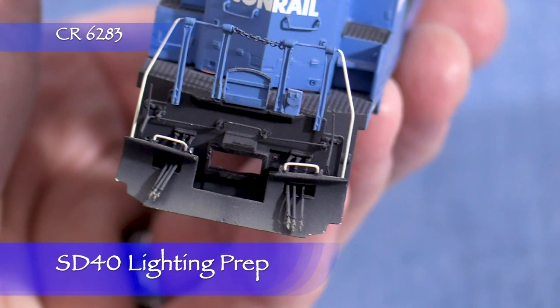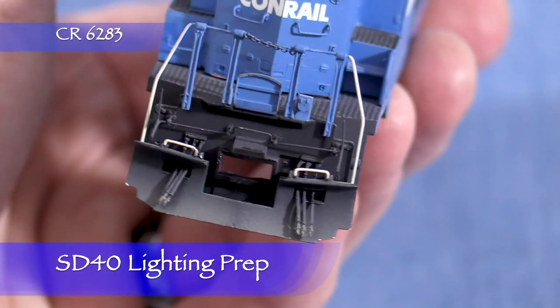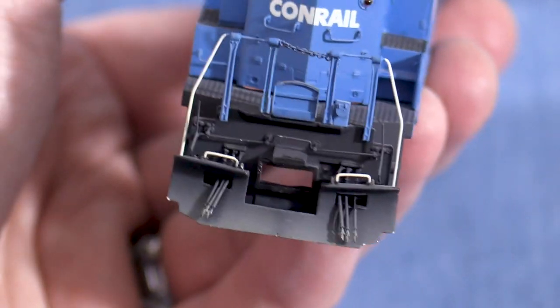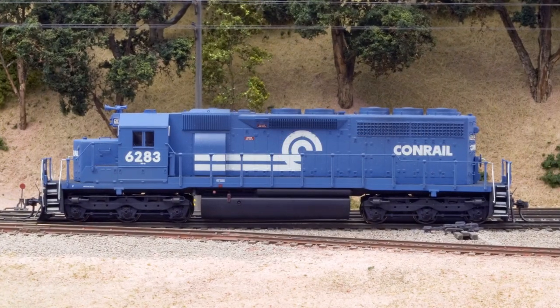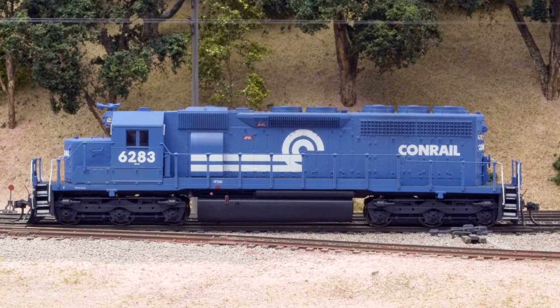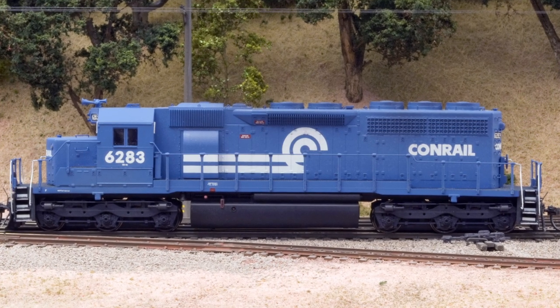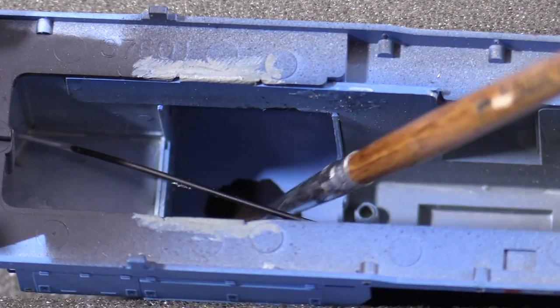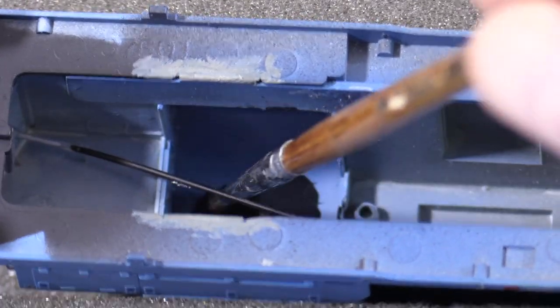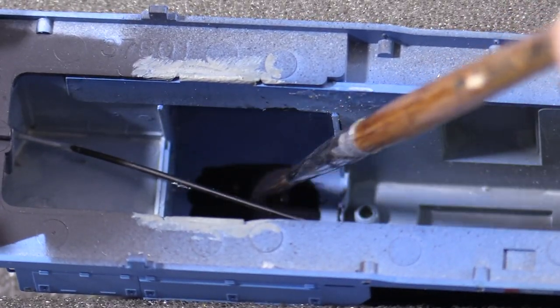Now that 6283's pilot is done, I'll turn my attention to preparing the interior of the model for lighting and sound. When I built this model the first time, I set it up with translucent lightable number boards, but I never installed any lights. I want to fix that. One of the tricks to lighting up a model effectively is to make sure that the light doesn't spill out of the places that it shouldn't. LEDs are bright.